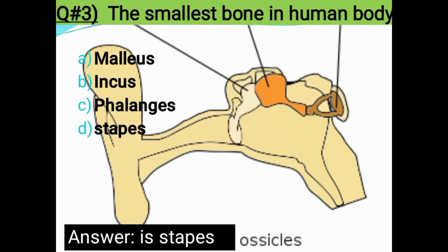Question number three: What is the smallest bone in the human body? Options: Malleus, Incus, Pharyngeus, or Stapes. The correct answer is the Stapes — it is an auditory ossicle bone.